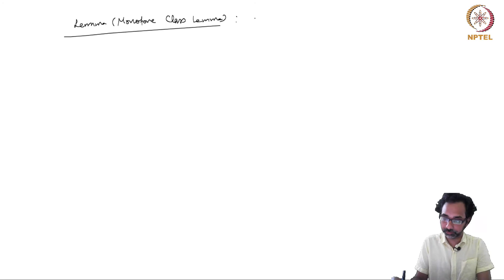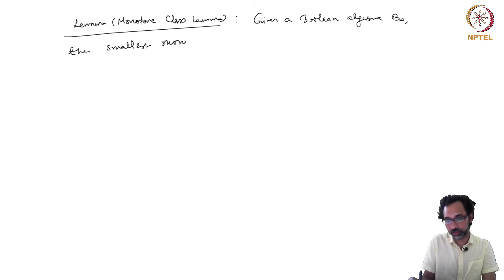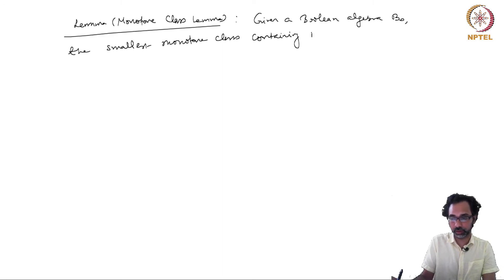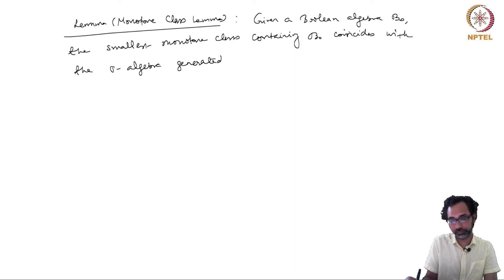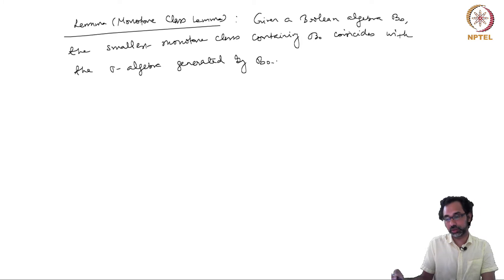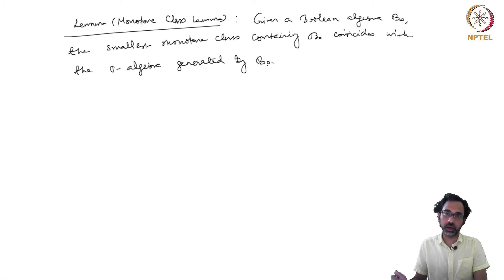The monotone class lemma says that given a Boolean algebra B₀, the smallest monotone class containing B₀ coincides with the sigma algebra generated by B₀. So in the case of a Boolean algebra, the monotone class generated by B₀ and the sigma algebra generated by B₀ are the same.